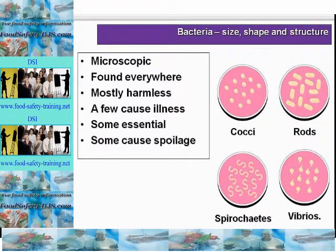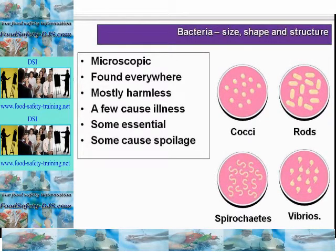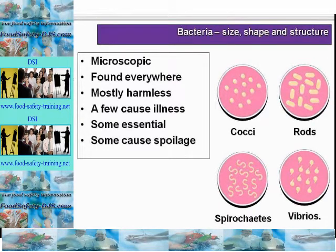Some bacteria help digestion and some are beneficial to the food industry, for example in cheese and yogurt manufacture. Bacteria are microscopic, varying between 0.001 and 0.003 millimetres. Colonies are visible following lab incubation, and the effects of large numbers of spoilage bacteria can be detected on meat when there has been a breakdown in controls, for example slime and odour.